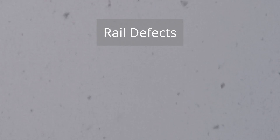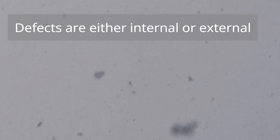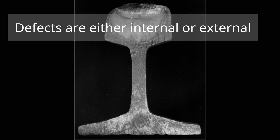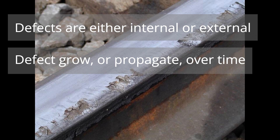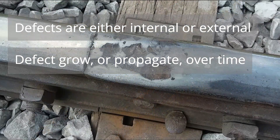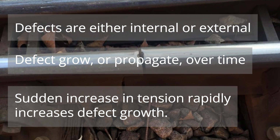Rail defects occur in a number of ways. Commonly they are either internal defects formed in the manufacturing process, or external defects from damage to the rail. Defects tend to grow in size with time, slowly weakening the rail. Under normal conditions it could take years for them to get to the point where the rail properties would become compromised enough for it to break. However, when you suddenly increase the tension within the rail, as occurs when the temperature drops, this can be enough to cause the rail to fail.